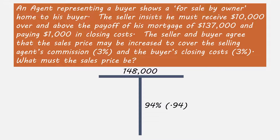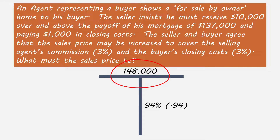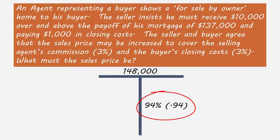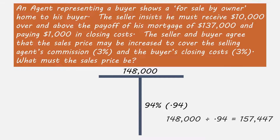Now that we know the part — the amount of money the seller needs to receive at closing — and we know what that number represents, 94% of the sales price, our T-bar indicates we need to divide: $148,000 divided by 94%, or 0.94. Using that equation, we determine the final sales price will be $157,447.